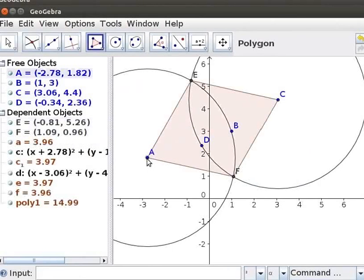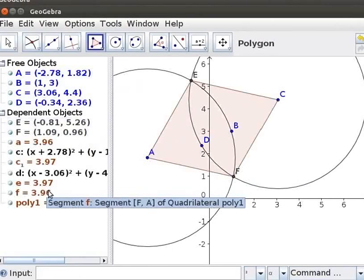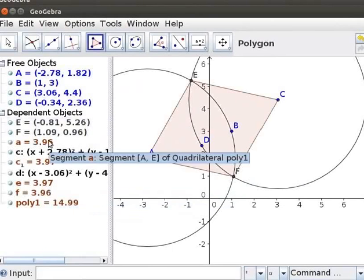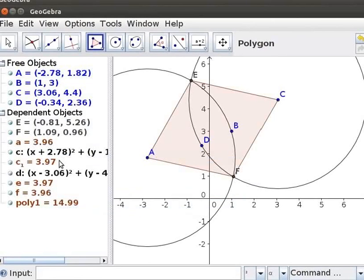We can see from the Algebra view that two pairs of adjacent sides are equal. Do you know why? Can you figure out the name of this Quadrilateral?